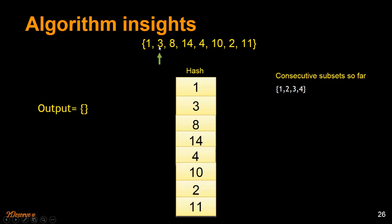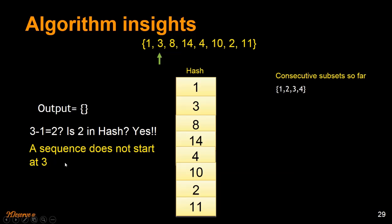Let's go to 3 and try to see if there is a sequence that starts at 3. We check if 3 minus 1, equal to 2, is in the hash. Since 2 is in the hash, there is definitely no sequence starting at 3 — in fact, 3 is part of some other sequence. We know that 3 is part of 1, 2, 3, 4, so we don't need to start looking for a sequence beginning at 3.